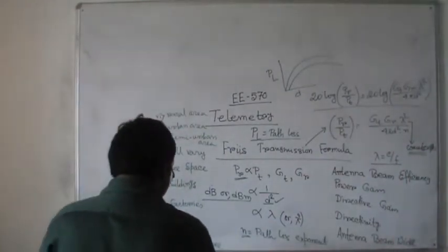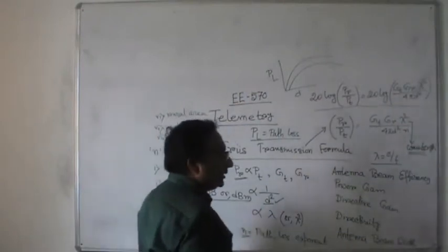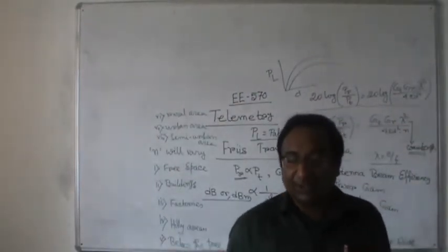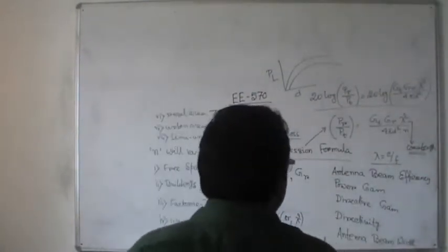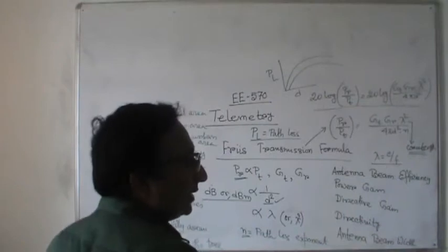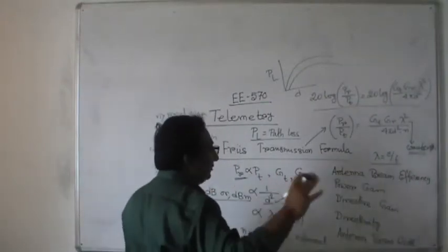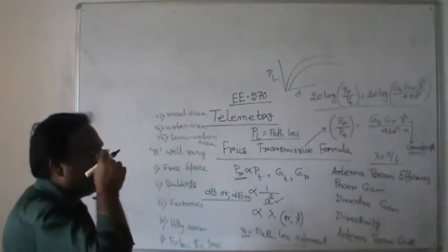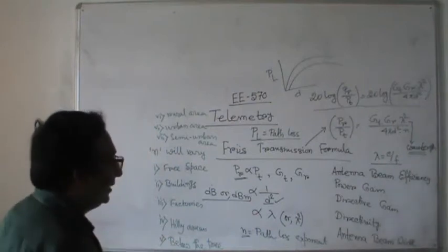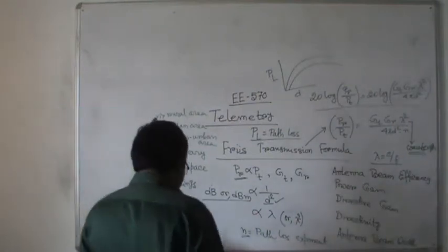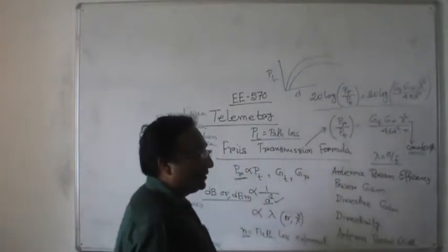One more thing: suppose there are several stations placed in remote areas. Whenever radio wave propagation comes from there, how the particular signal will be collected at the receiving end — for that, there will be one concept known as a repeater.